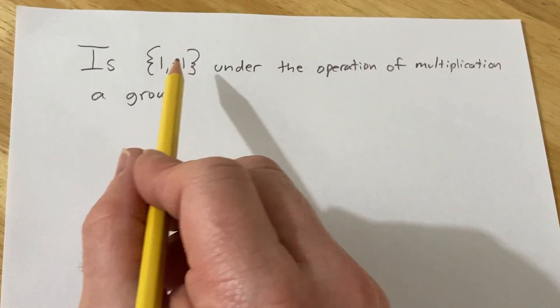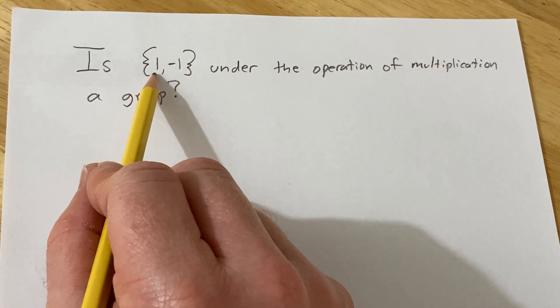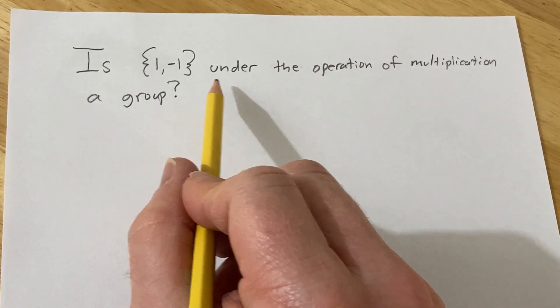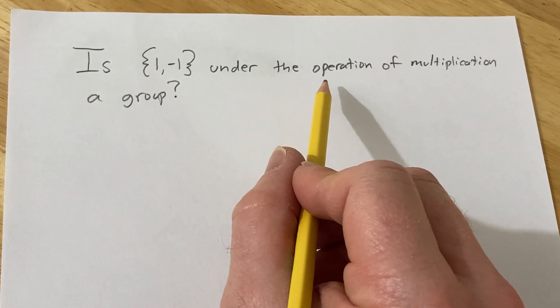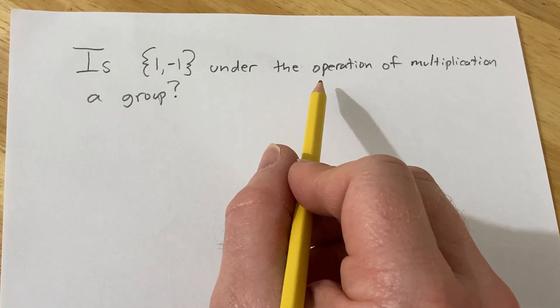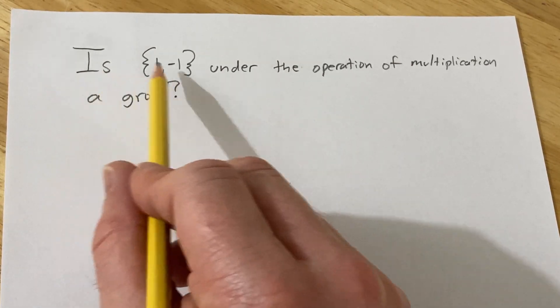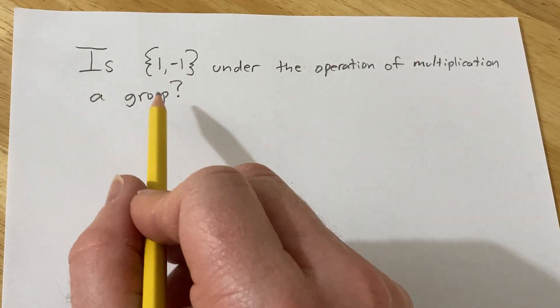Hi, in this problem we have a set, and it's the set containing the elements 1 and negative 1. And the question is to determine if it's a group under the operation of multiplication. So it says, is this set under the operation of multiplication a group?